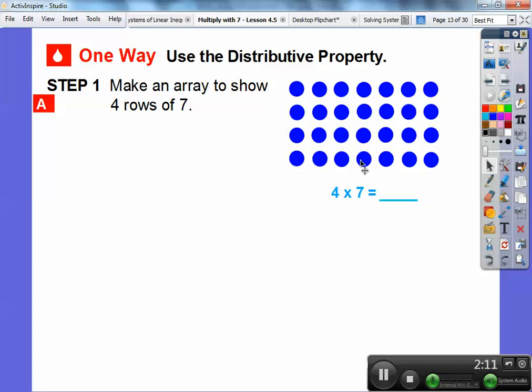One, two, three, four, five, six, seven. So here's four times seven. You can count up all those dots if you want. That's what you'd get for four times seven.